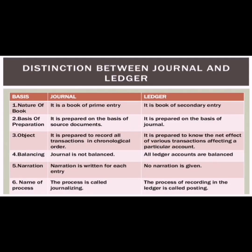Here are a few distinctions between journal and ledger. First, in terms of nature of book: the journal is a book of primary entry and the ledger is a book of secondary entry — transactions are first recorded in the journal and then posted to the ledger. Second, in terms of basis of preparation: the journal is prepared on the basis of source documents such as vouchers, while the ledger is prepared on the basis of the journal.